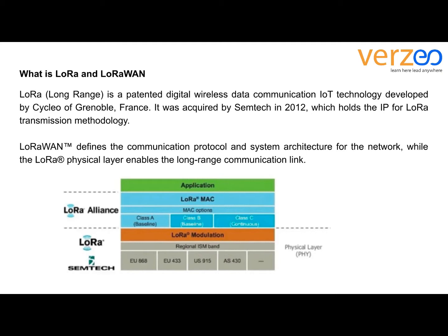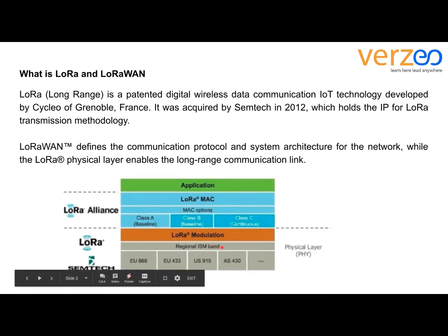LoRa was acquired by Semtech in 2012, which holds the IP for the LoRa transmission methodology. LoRaWAN defines the communication protocol and system architecture for the network, while the LoRa physical layer enables long-range communication. The layer diagram shows the application layer, MAC layer, and baseline classes A, B, and C, plus LoRa modulation, regional ISM bands, and country code — constituting the physical layer.